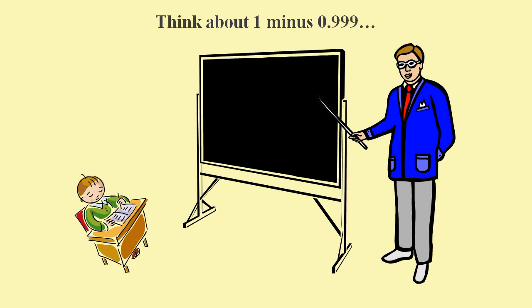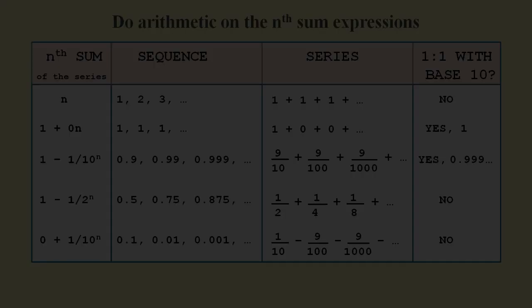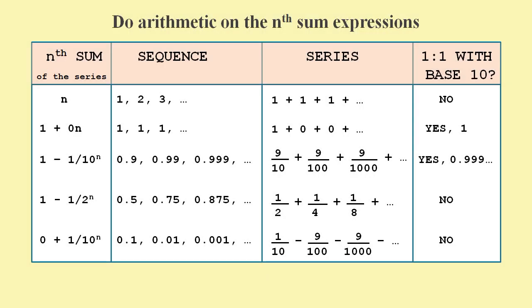Next, we have the argument that if we subtract 0.9 recurring from 1, we get 0. Hence, 0.9 recurring must equal 1. But if 0.9 recurring is not a fixed value and instead it's a sequence, then in order to subtract it from 1, we need to treat 1 as a sequence and to do arithmetic on sequences or series. The number 1 can be converted to the series 1 plus endless 0s.